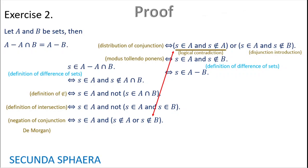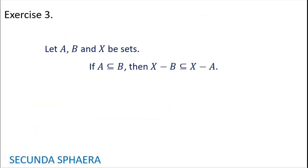Right now we have just an argument connected by equivalences from A without (A intersection B) to A without B. So they are equal. This would be for exercise number 2. Moving on to exercise number 3.